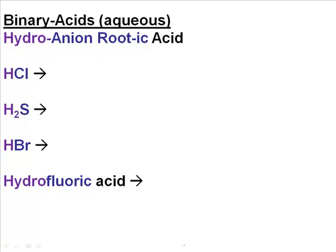To name an acid, all you have to do is put the hydro down first, and then the anion root - that's whatever is included with the H. This is chlorine, so it turns into chloric, and you include the word acid. So HCl becomes hydrochloric acid.